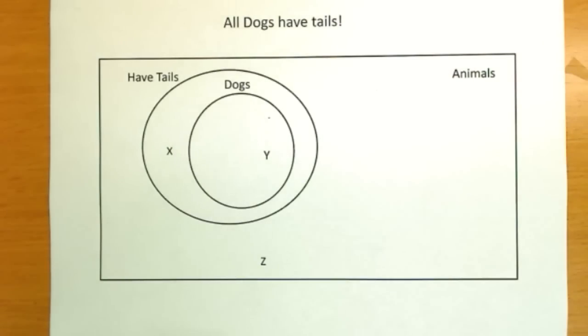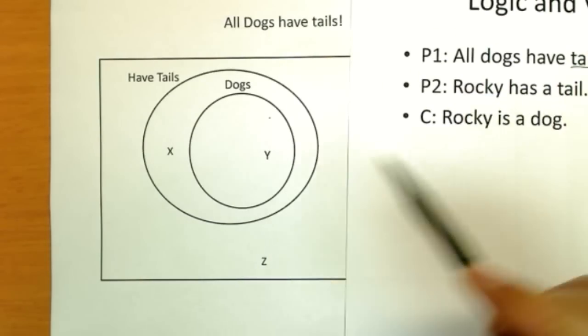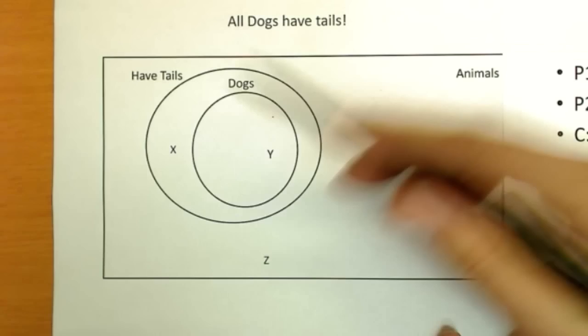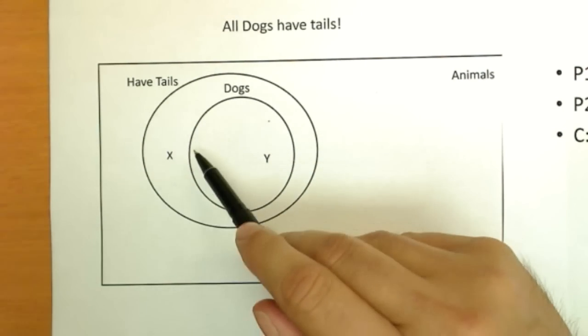Rocky has a tail. Therefore, Rocky is a dog. Okay. Premise two. Rocky has a tail. What does that tell you about Rocky in this world here of animals? It tells us he has a tail. It doesn't tell us whether or not he's a dog. So all we know is he has a tail.